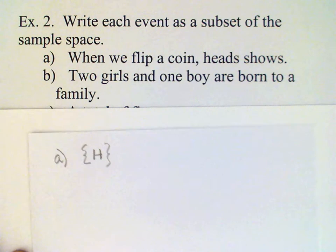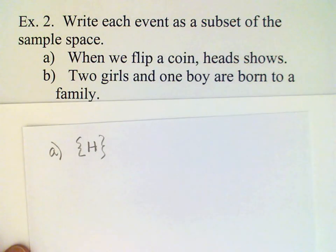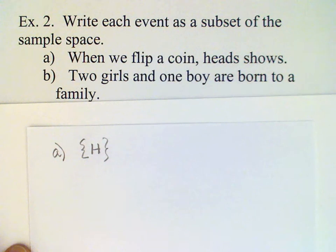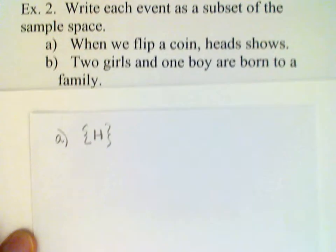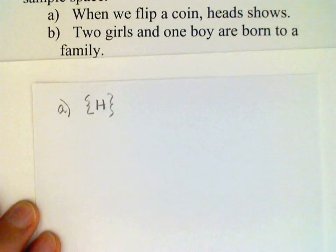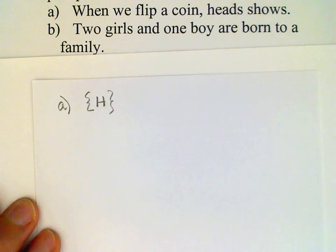Part B: Two girls and one boy are born to a family. Remember that sample space we looked at where you could have two girls and a boy in three different ways.